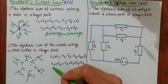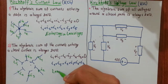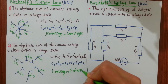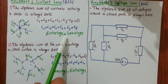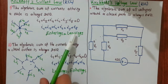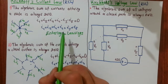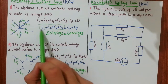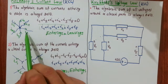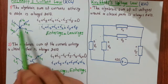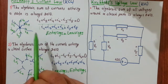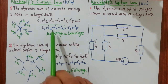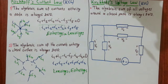You can also write this as I1 plus I5 equals I2 plus I3 plus I4 plus I6, meaning leaving equals entering. Note that I1, I2, I4, I6 are leaving this node, while I3 and I5 are entering — so the equation should reflect that. That's all for Kirchhoff's current law.